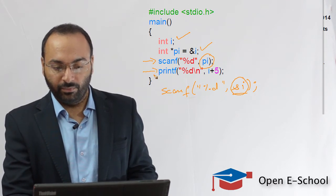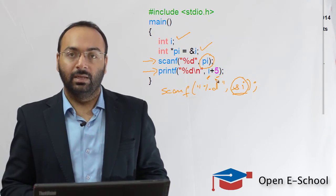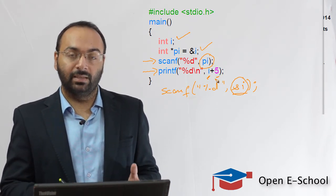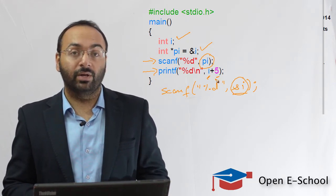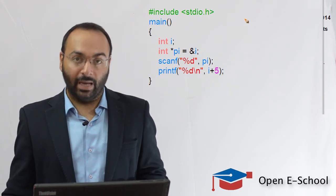In the last statement, we are printing the value of i plus 5. So if the value of i is entered as 10, the output should be 15. If the value is entered as 20, the output should be 25. Let's just run the program and see if this is the output that we get.